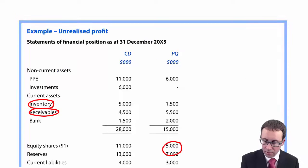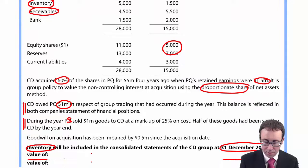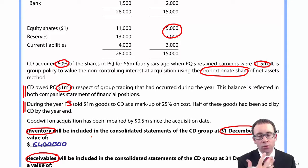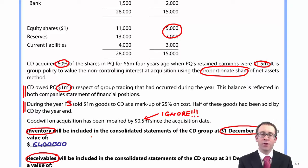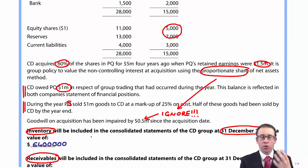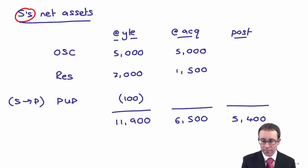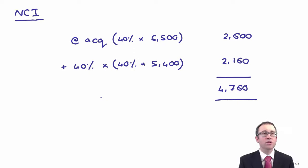You do not deduct the impairment from the non-controlling interest. The question states that goodwill on acquisition has been impaired by 0.5 million since the acquisition date. You would put that into your goodwill calculation; however, in this question we ignore it for the NCI. We don't give the non-controlling interest their 40% share of the impairment. Why? Because it is the proportionate share of net assets method. The goodwill calculated is the parent's share only, so any impairment goes entirely to the parent's retained earnings and doesn't appear within the non-controlling interest. So that's the net assets working — any impairment does not need to be shown. Quite a clever little trick.